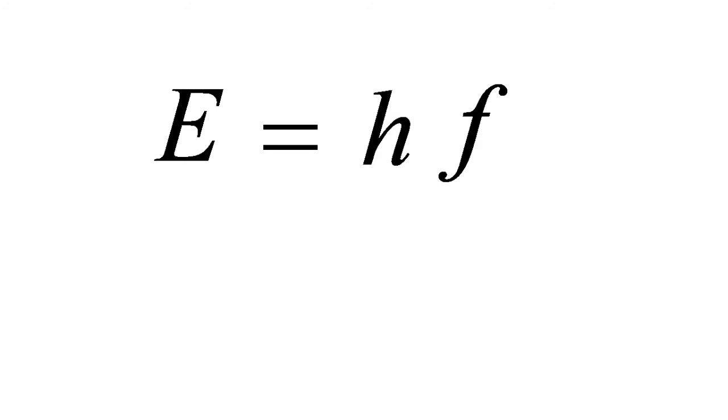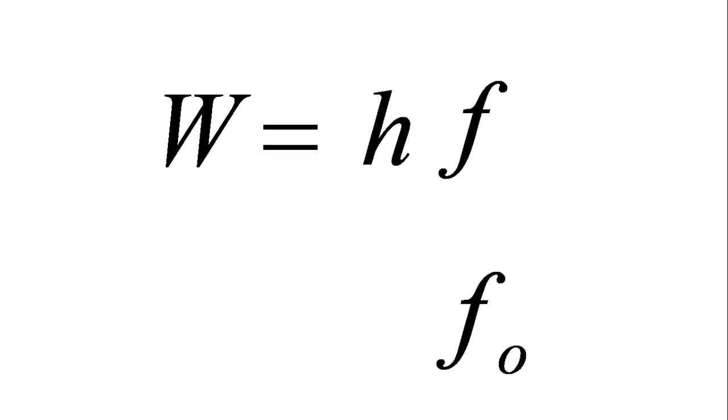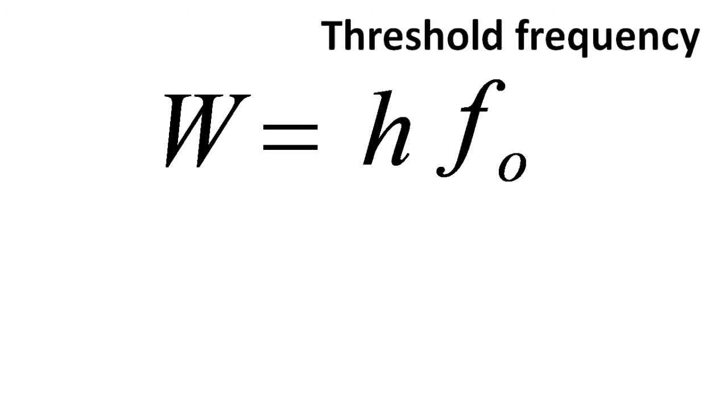E is equal to hf. Yes, we can replace E with W, which is the work function or energy that holds the electrons to the metal. And then we replace f with f0, which is the corresponding amount of frequency that holds the electrons to the metal. That's an interesting way to look at it. And that is correct. So we get a new equation, W equals hf0, where f0 is an amount of frequency known as the threshold frequency.